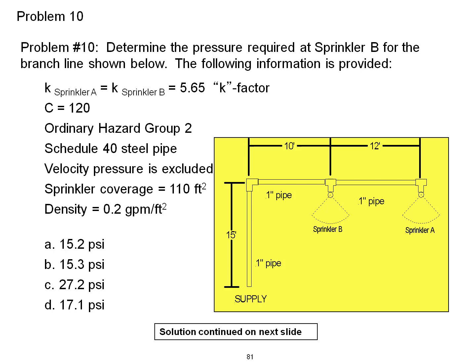Problem 10. Determine the pressure required at sprinkler B for the branch line shown. The following information is provided.